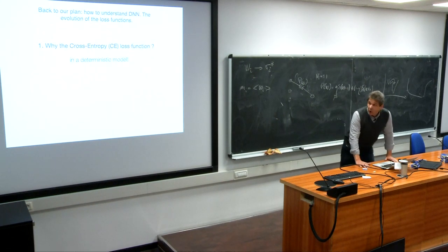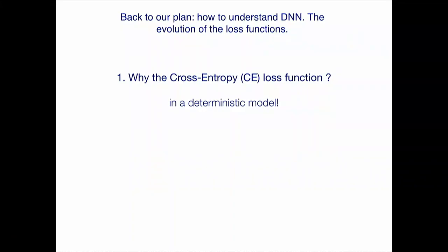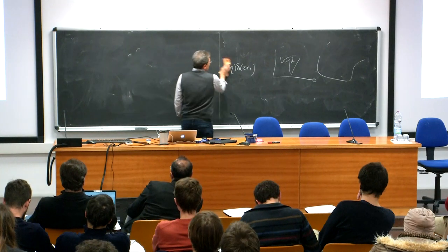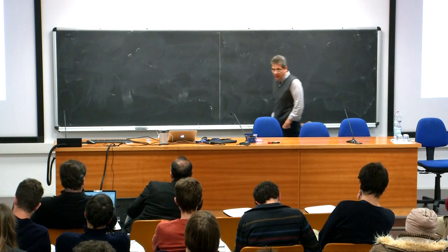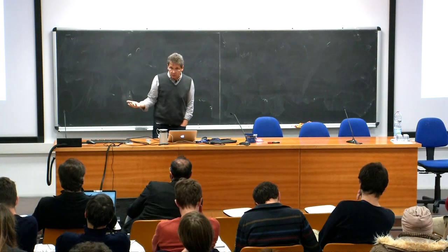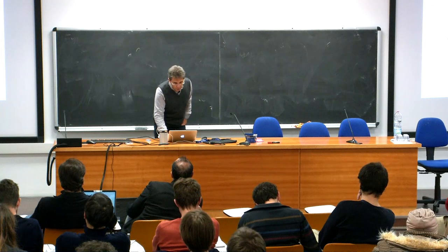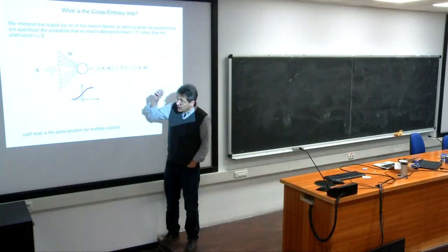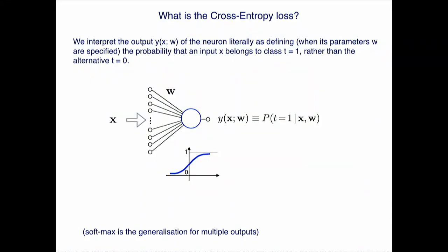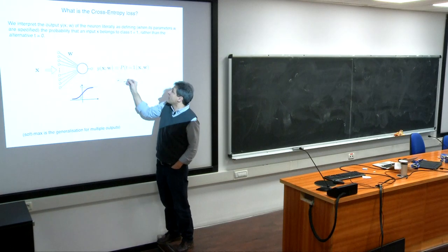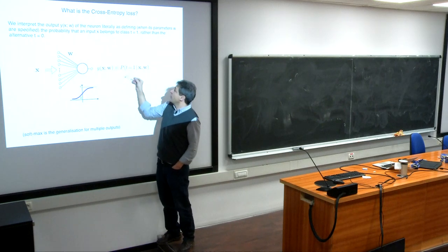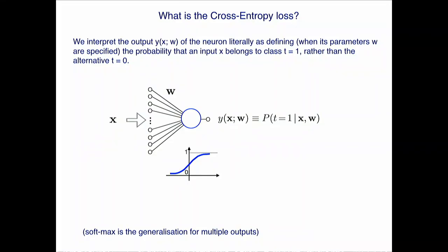Now let's go back to machine learning. This is the last part: the first step in understanding all the tricks introduced in deep learning. The thing I want to discuss is why people started to use cross entropy. The cross entropy is related to interpreting the output of a neuron as the probability of the label, not as the label itself. You normalize the output to be between zero and one, and the output y is just the probability that the label is one given the input and the weights.